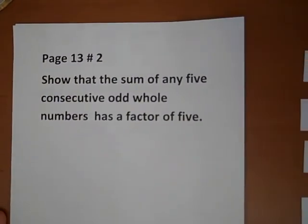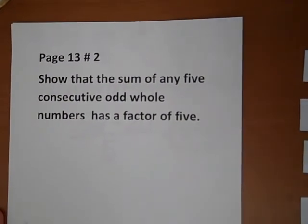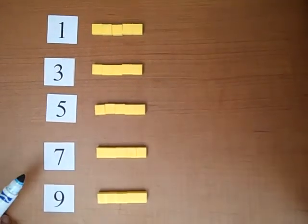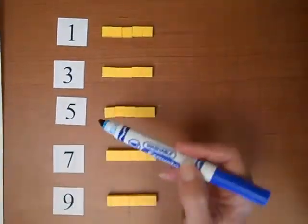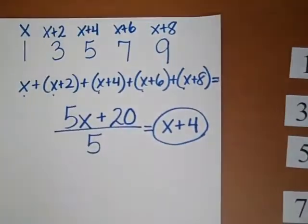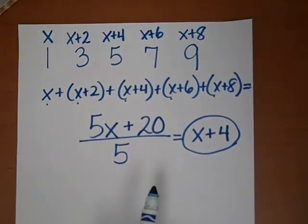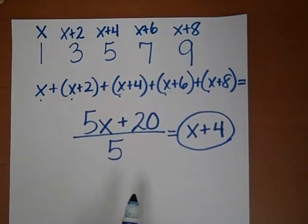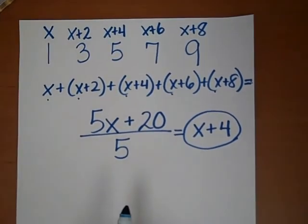So we have solved our problem, and we have shown that the sum of any 5 consecutive odd whole numbers has a factor of 5. We've done it using the manipulatives, and we've also done it using algebra. Thank you, Cathy, for asking that question, and we'll see you next time for another problem.